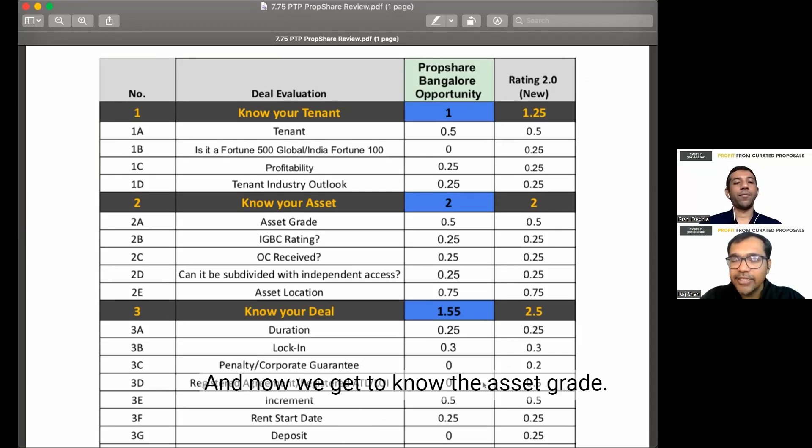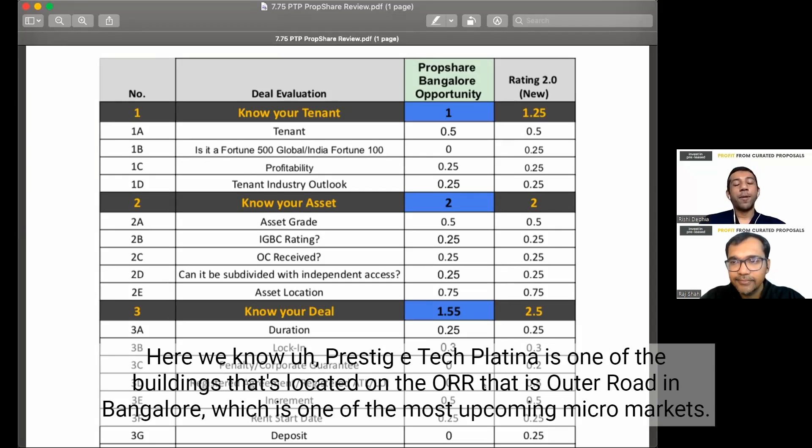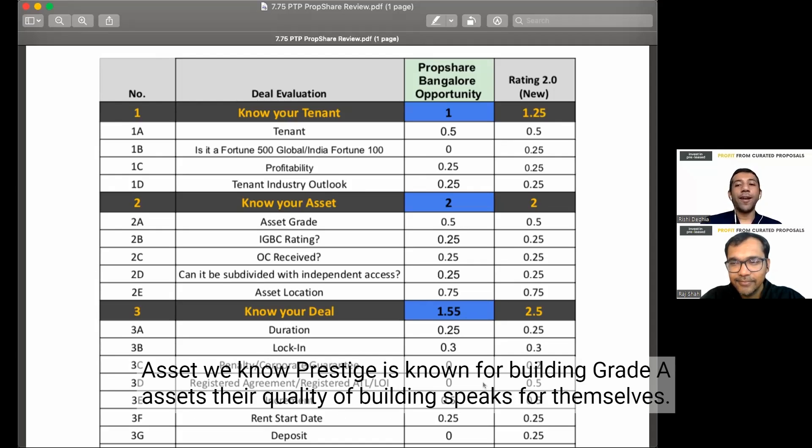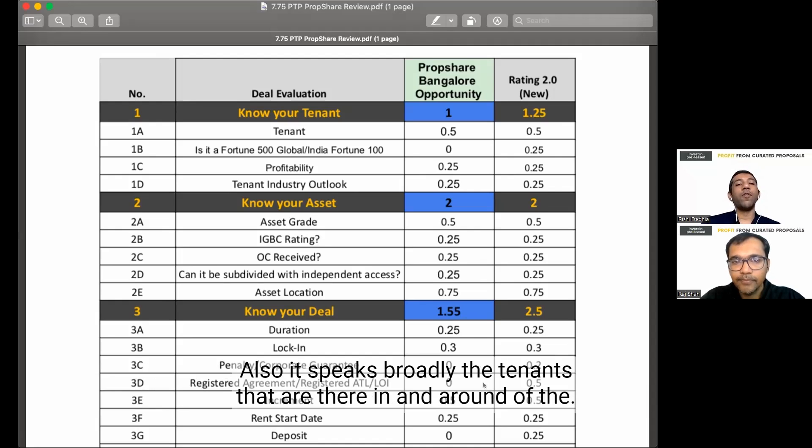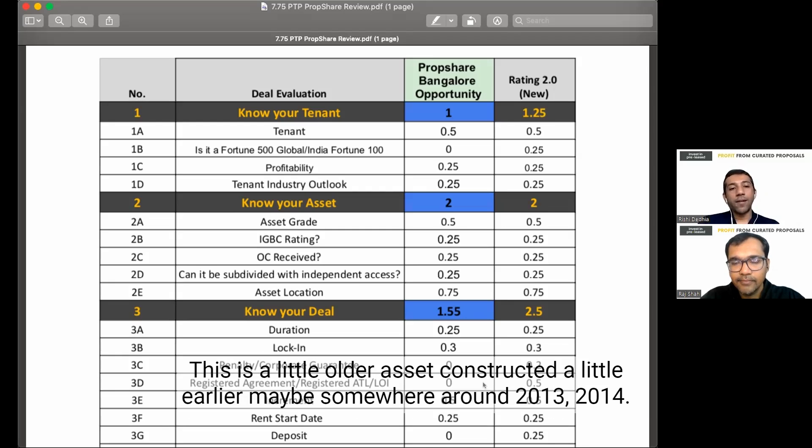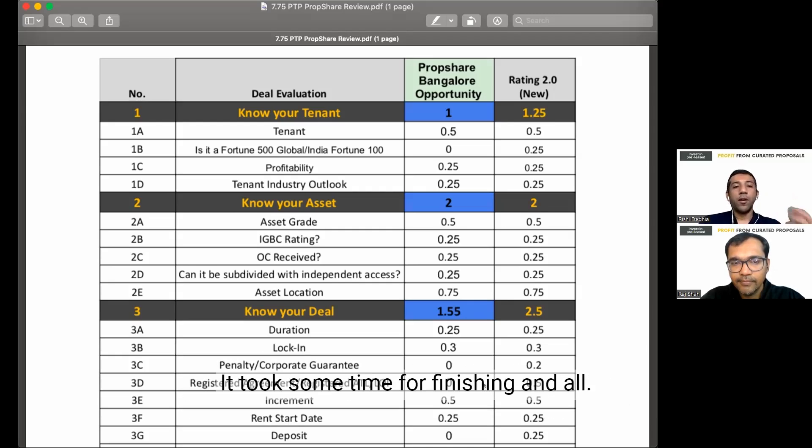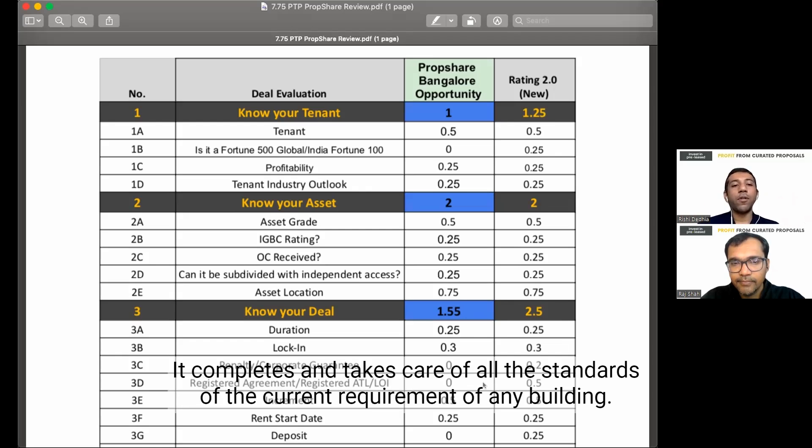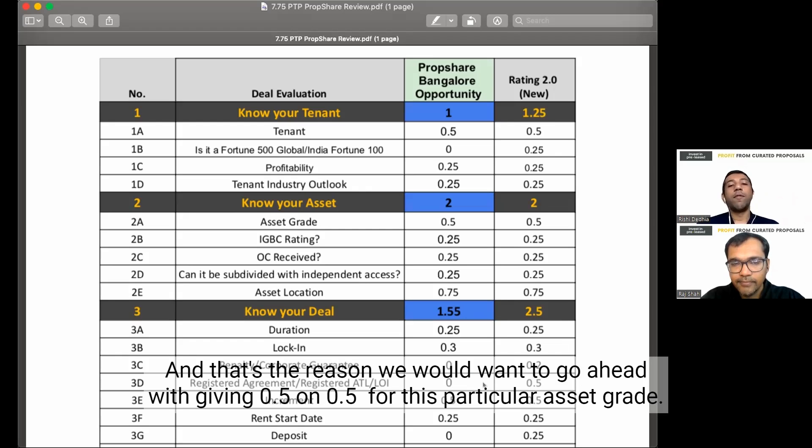And now we get to know the asset grade. What do you think of the asset? Here we know Prestige Tech Platina is one of the buildings that's located on the ORR, that is outer ring road in Bangalore, which is one of the most upcoming micro markets. We know Prestige is known for building grade A assets. Their quality of building speaks for themselves. Also, it speaks about the tenants that are there in and around the asset as well. We have not physically visited this particular asset, but yes, this asset received OC in somewhere around 2017. This is a little older asset, constructed a little earlier, maybe somewhere around 2013, 2014. The asset grade is grade A. It completes and takes care of all the standards of the current requirement of any building. And that's the reason we would want to go ahead with giving 0.5 on 0.5 for this particular asset grade.